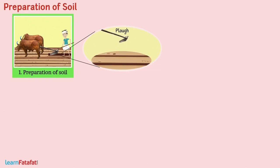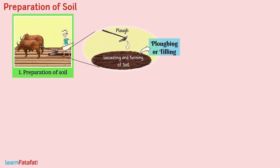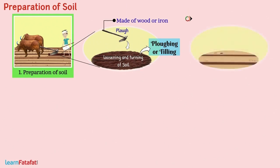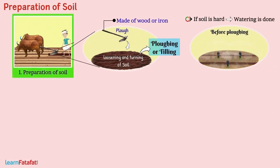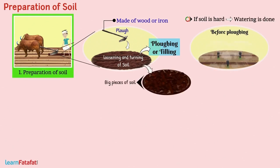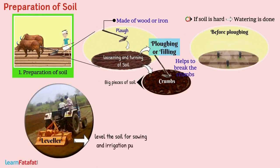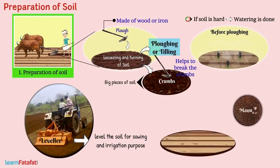With the help of a plow, the soil is prepared by loosening and turning it. The process of loosening and turning the soil is called plowing or tilling. It is done using a plow made of wood or iron. If soil is hard, watering is done before plowing to make it soft. Plowing forms big pieces of soil called crumbs. A plank helps to break the crumbs further, and a leveler helps to level the soil for sowing and irrigation. Sometimes manure is added to the soil before plowing to mix it properly.